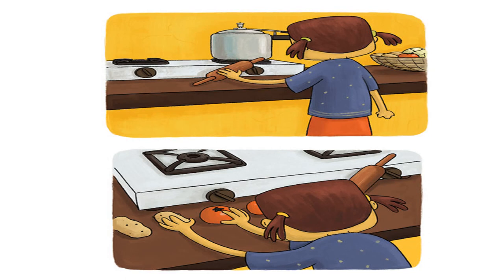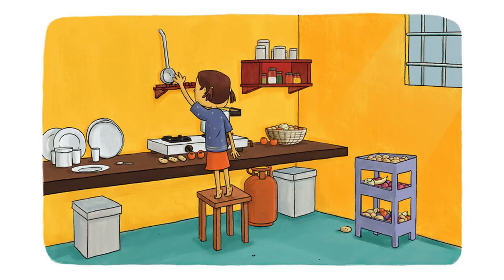Nivi picks up the rolling pin and places it close to the gas knob. She arranges a row of tomatoes and potatoes behind it. The rasam and dal ladle is next. Nivi places it carefully on the edge of the shelf above the cooker.